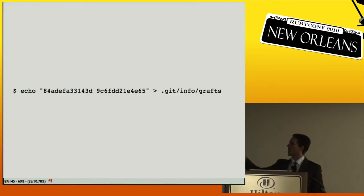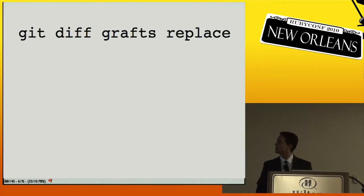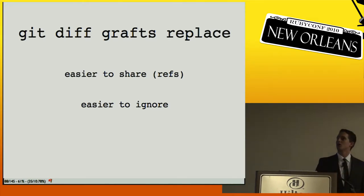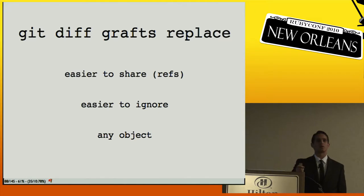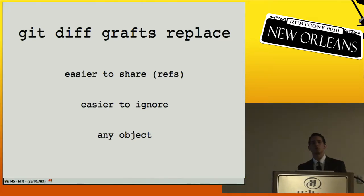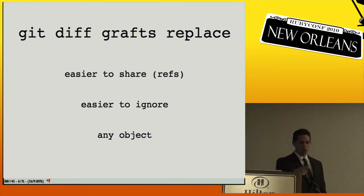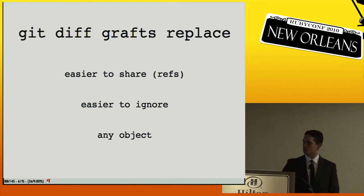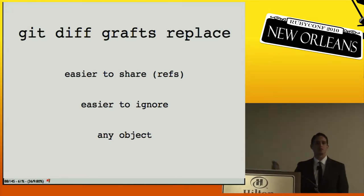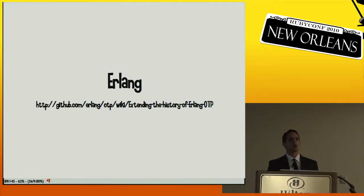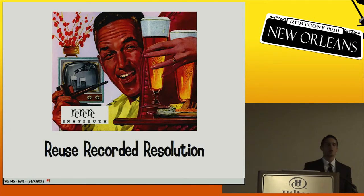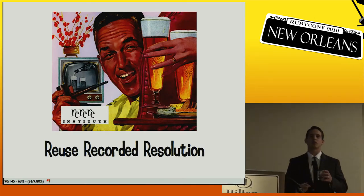Compared to grafts (where you echoed 'replace this commit with this commit' into a file), replacements are in ref-space so they're pushable and fetchable. You can replace any object — trees, blobs, etc. Interesting use cases include replacing a vendor directory with an empty one and then swapping in large binary files via replacement. The Erlang project on GitHub does this: you only get the last few releases by default; the full history is available via their wiki instructions.